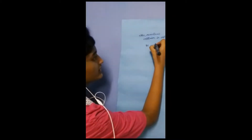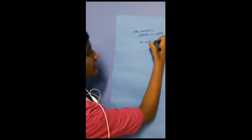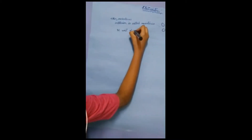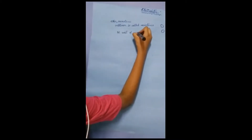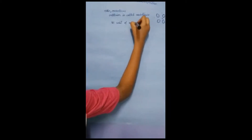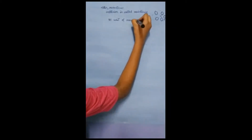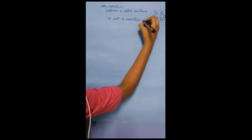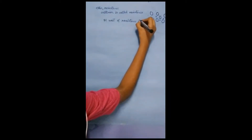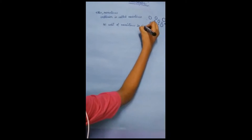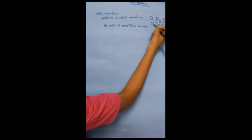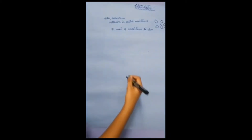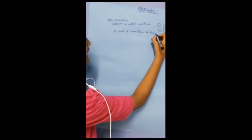The SI unit of resistance is ohm, which is denoted by the letter omega (Ω).